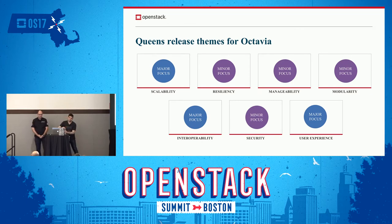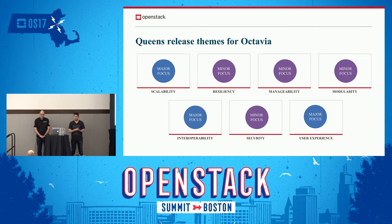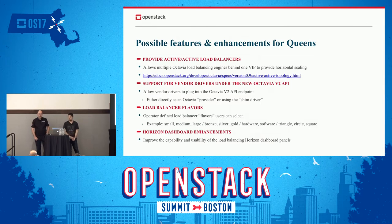Our release themes for Queens are similar — we're still focusing heavily on user experience, but also interoperability and scalability. One focus for Queens is being able to scale much better, so we're hoping to get our active-active work going. We're also really focusing on the UI, which has been somewhat stale for a few releases. We want to beef it up to be more featureful and expose all of what Octavia can do.